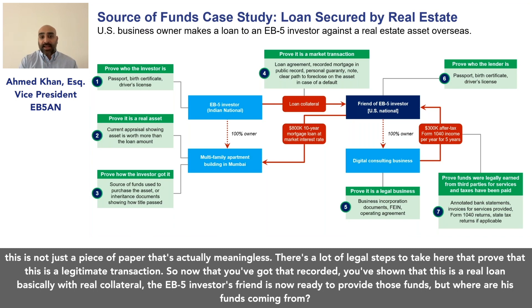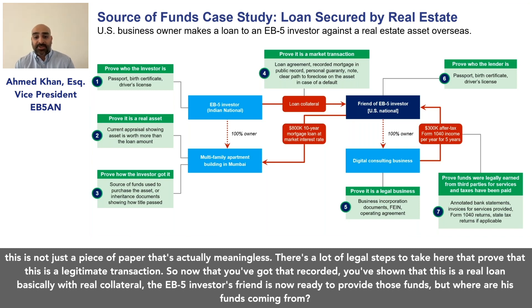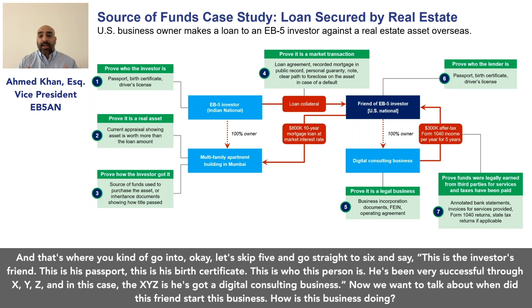Now that you've got that recorded and shown that this is a real loan with real collateral, the EB-5 investor's friend is ready to provide those funds. But where are his funds coming from?